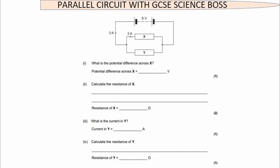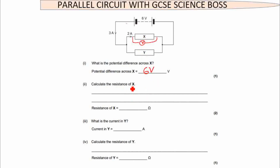Let's look at an exam-style question. We have a parallel circuit with 3 amperes of current coming in, splitting into two different resistors. What is the potential difference across X? If you put a voltmeter across X, remember this is a parallel circuit — therefore the potential difference has to be 6 volts, because the components are connected in parallel.